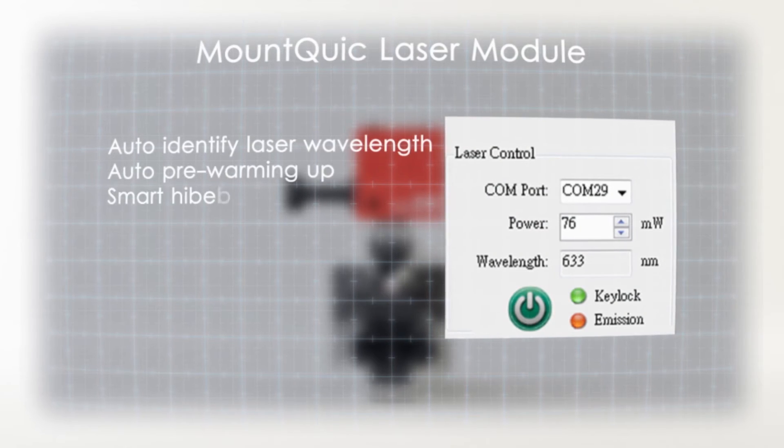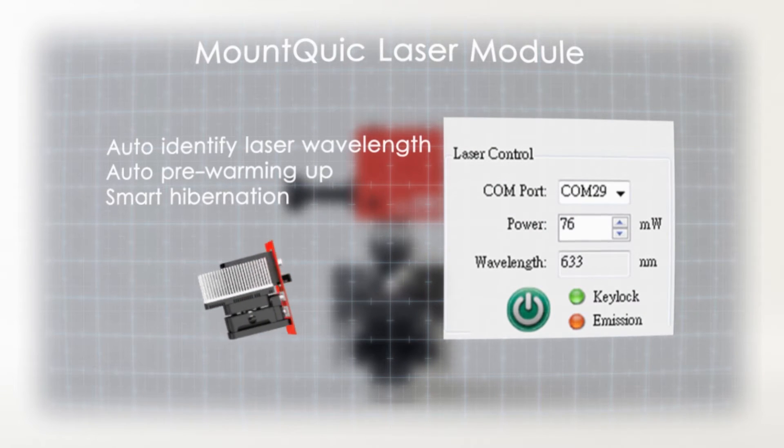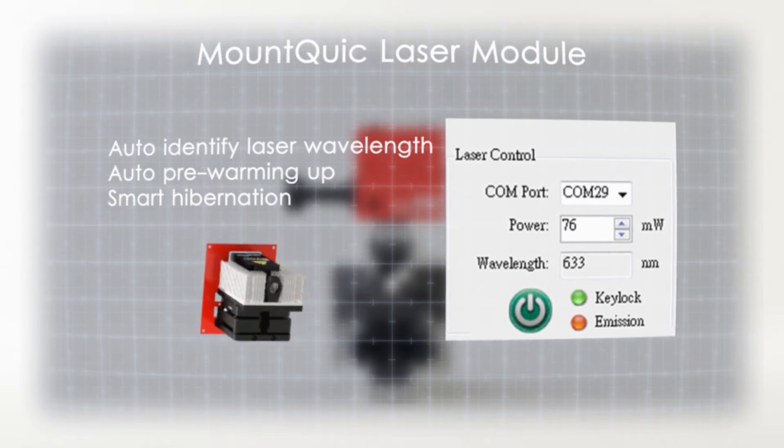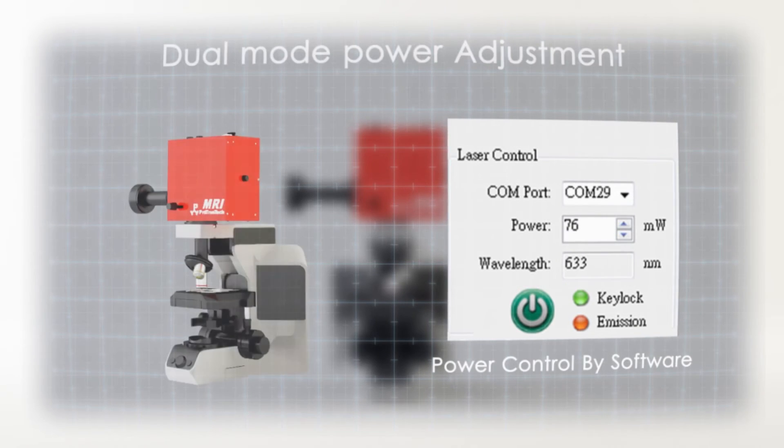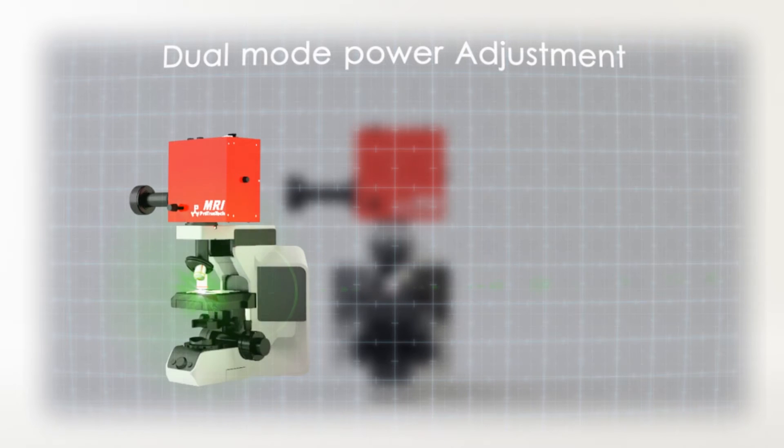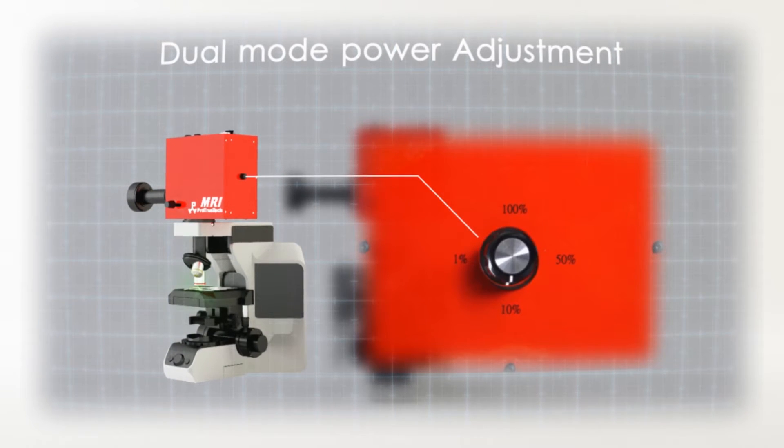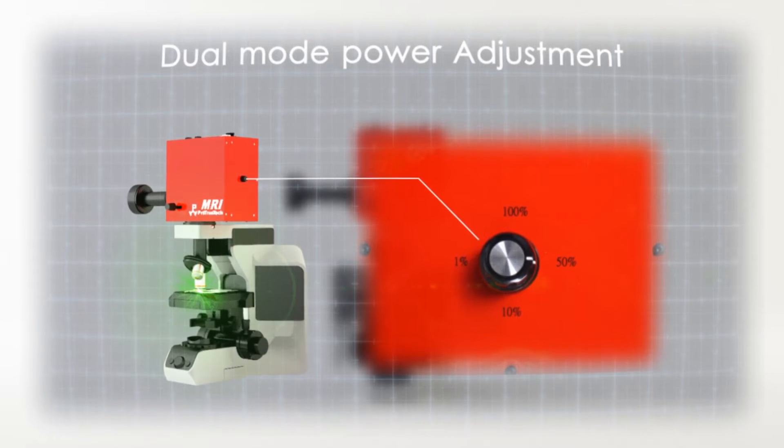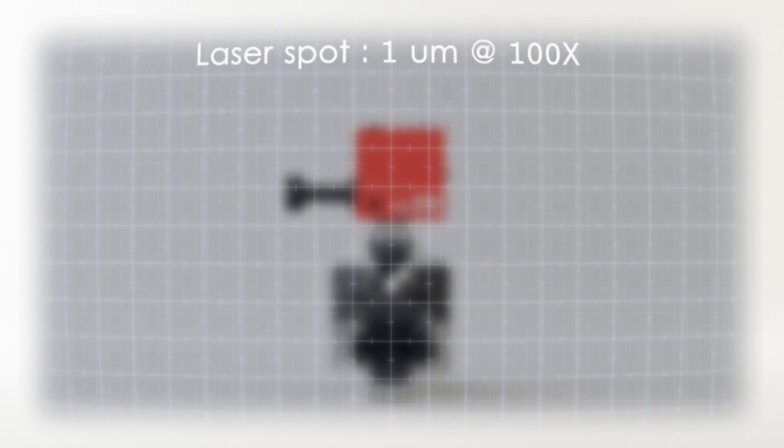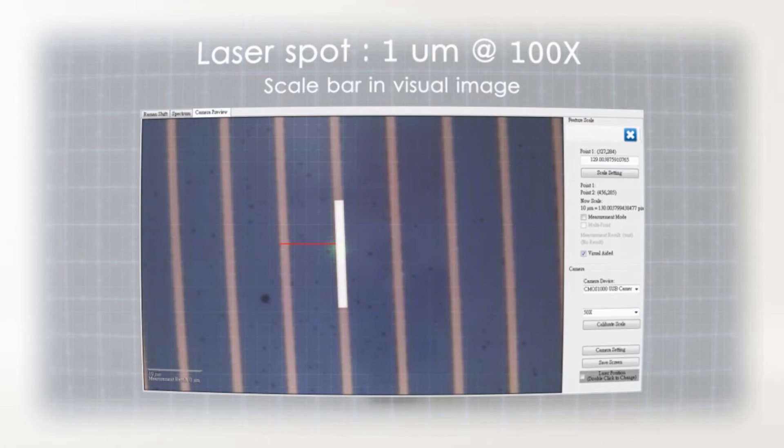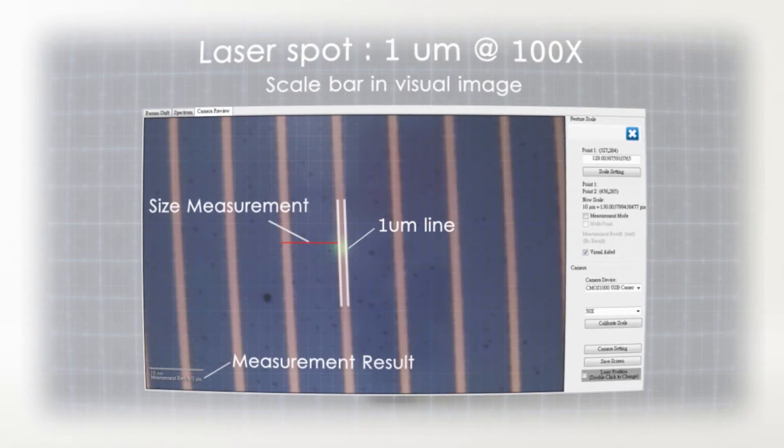MRI software can automatically recognize the wavelength of the current laser in use and can automatically warm up laser or put it into hibernation to increase the service lifespan of the laser. In addition, MRI allows you to set the laser power directly from the software, and the percentage can also be adjusted through rotating the ND filter.